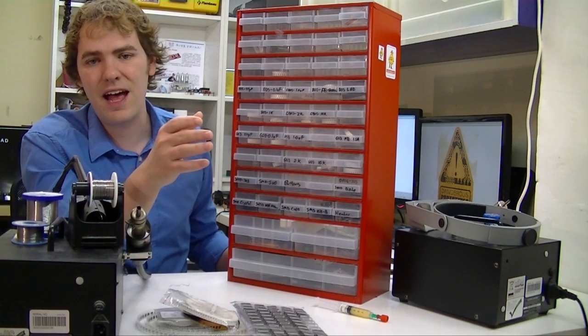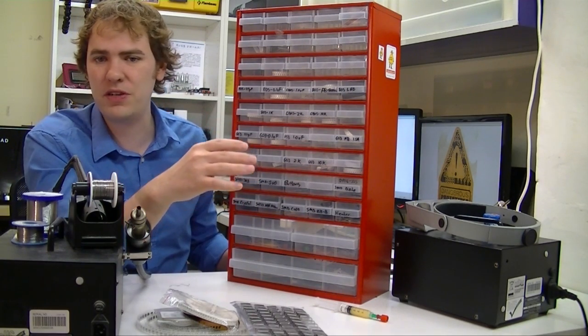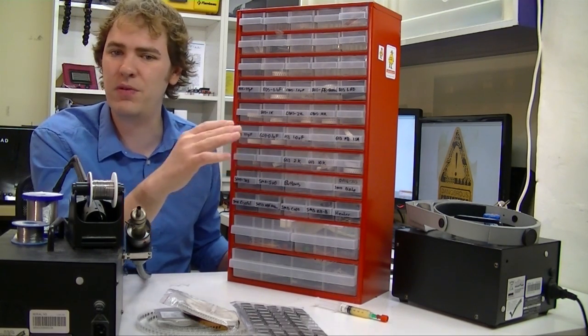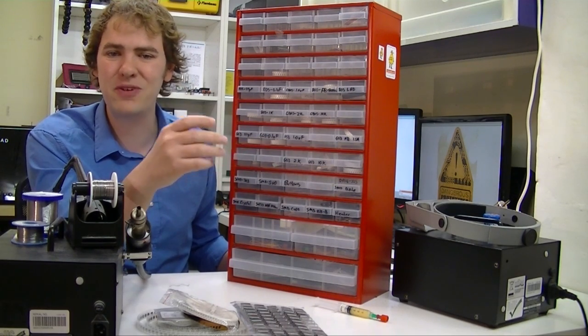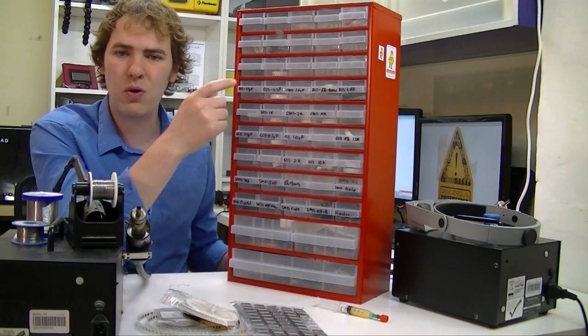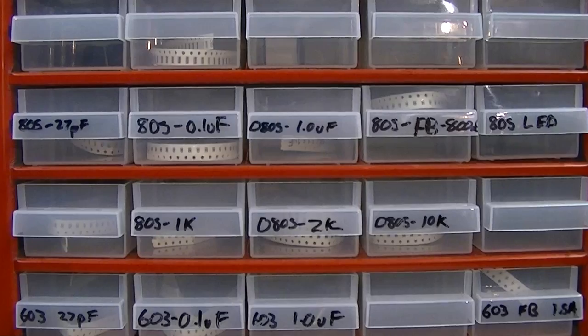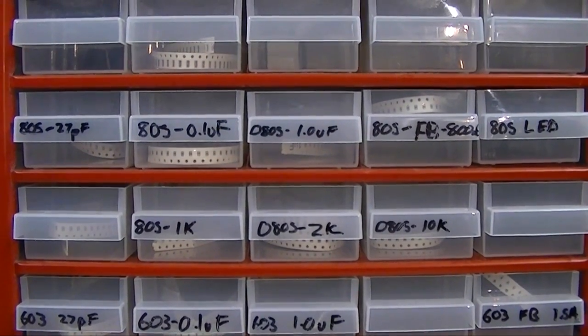When we're doing a prototype, especially a one-off or a first-time prototype, we fudge a lot of values and instead of using the exact value called for, we'll reach for whatever the closest value in this box is. So I'll tell you about some of the substitutions we make as we go through.